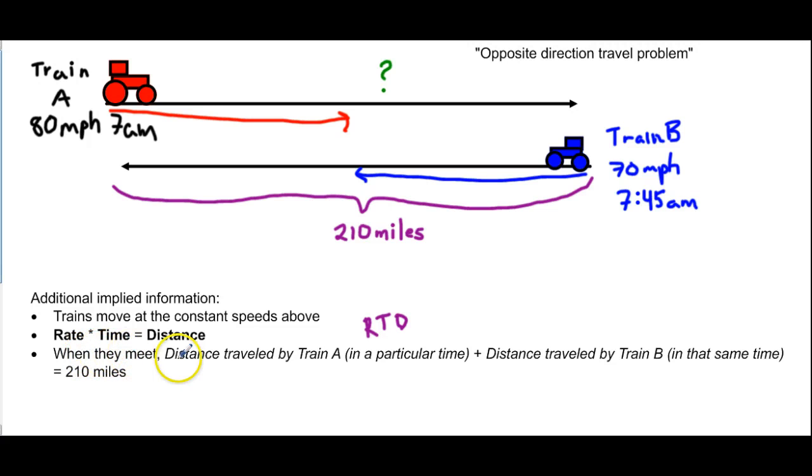Finally, the last thing we're going to need is the distance traveled by train A in a particular time plus the distance traveled by train B in that same time equals 210 miles. We're going to need that for this problem, and that's what I tried to illustrate here with these arrows. The red train travels a particular distance in a certain amount of time. In that same time, the blue train is going to go a certain amount of distance. So the red arrow plus the blue arrow, this distance plus this distance, has to be equal to 210.